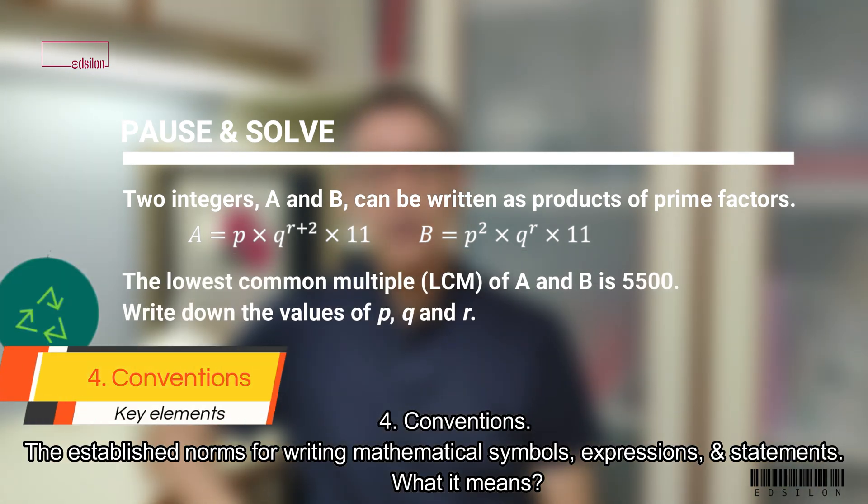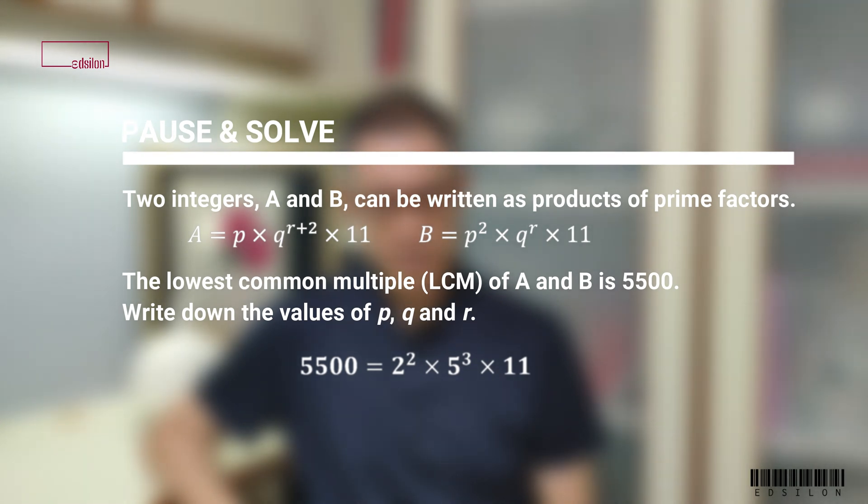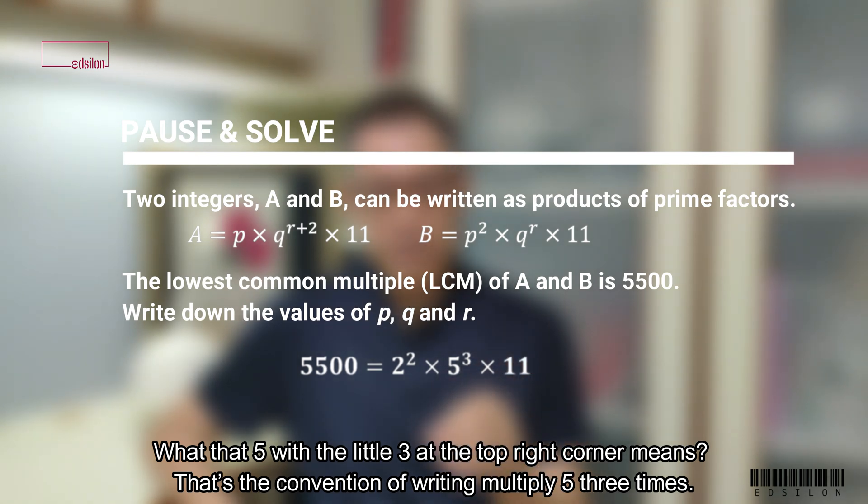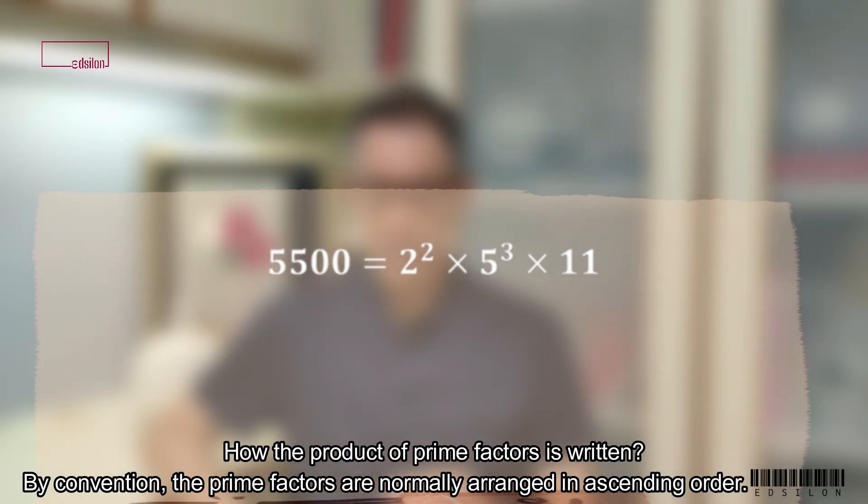4. Conventions. The established norms for writing mathematical symbols, expressions and statements. What it means. Look at 5,500 when expressed as the product of prime factors. What that 5 with the little 3 at the top right corner means. That's the convention of writing multiply 5 three times.